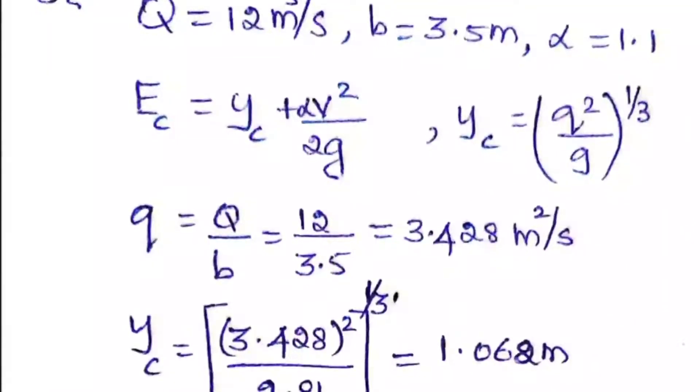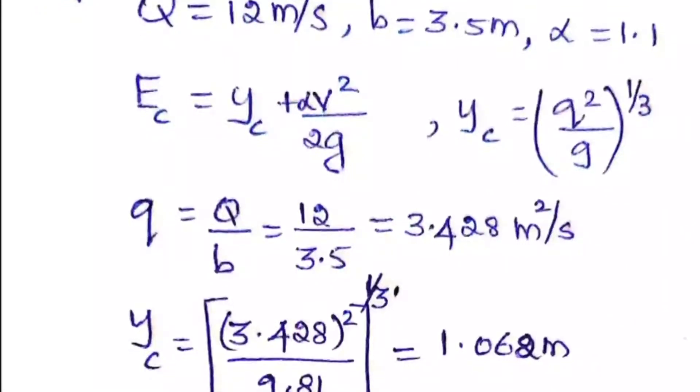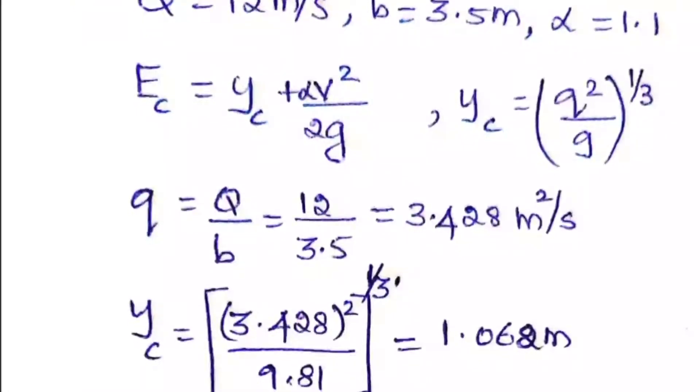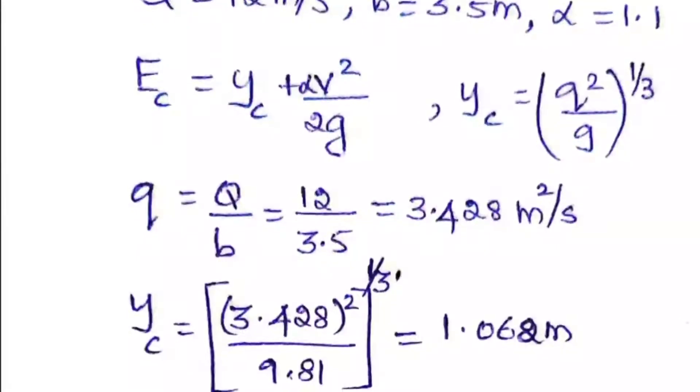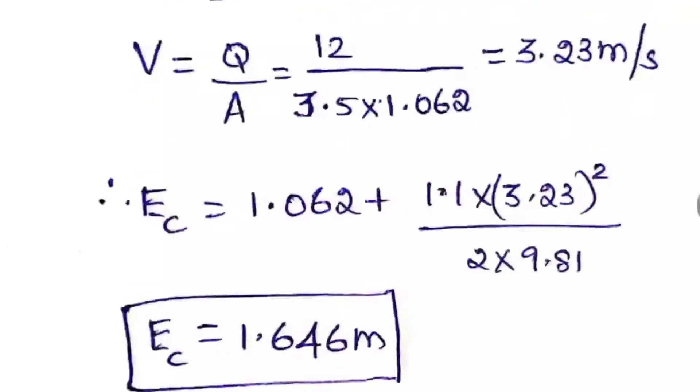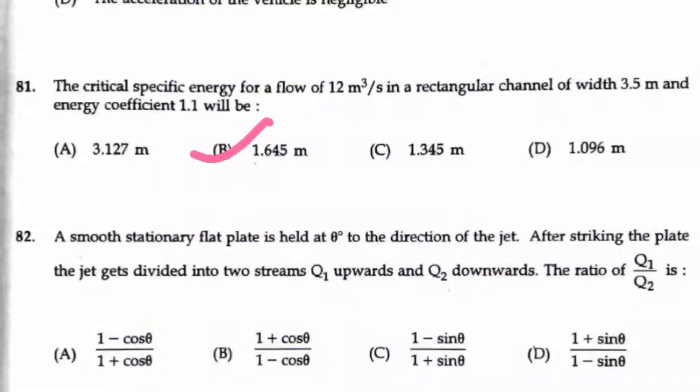So for calculating small q, you have to divide the width of the channel by the capital Q. So Q by B will give you 3.428 meter square per second as your q value. So with this you can calculate the YC as 1.062 meter. And now if you calculate the V, that is Q by area. So Q is given, and for area, the width into depth. So depth you have taken the YC as the depth here. So you will get 3.23 as your velocity. So by substituting these velocity and YC everything in the formula, you will get the specific energy as 1.646 meter. So option B is the right answer here.